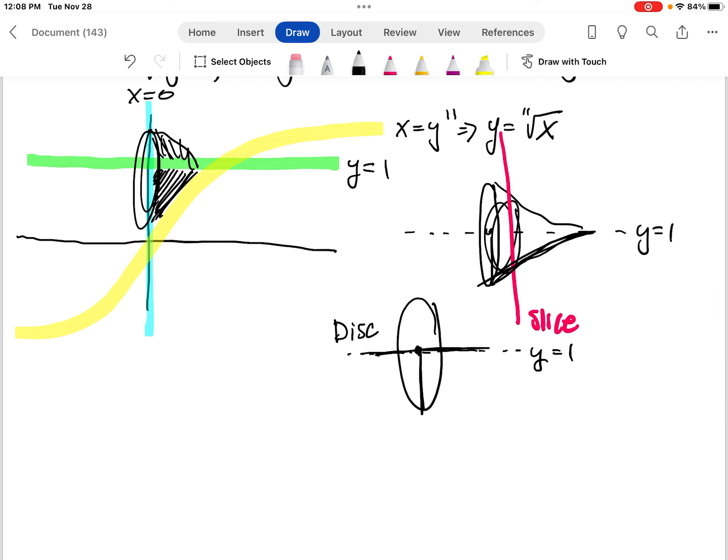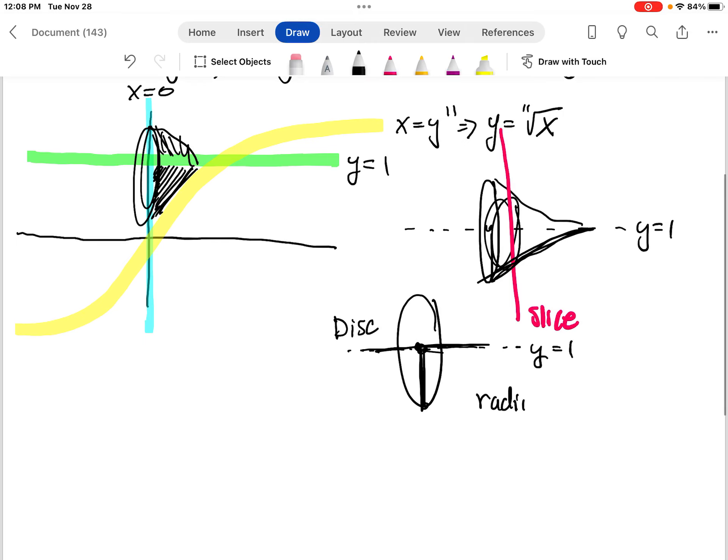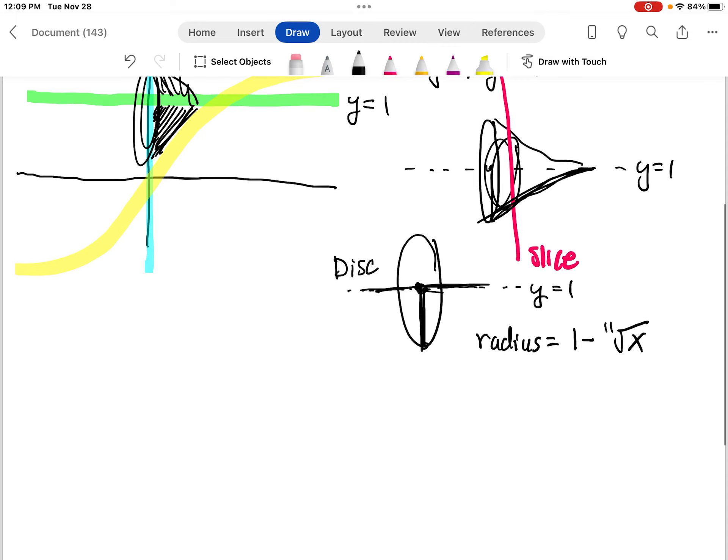So my radius for this disk is going to be whatever the function is at that point, and we're going to subtract it from 1, so from here to here. So my radius will be 1 minus the 11th root of x.